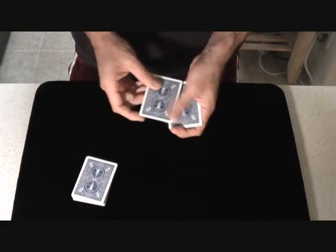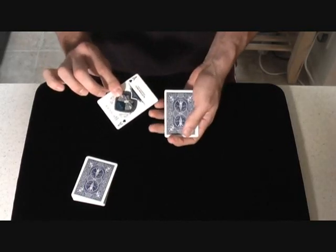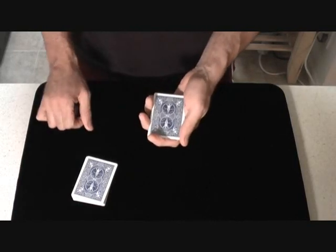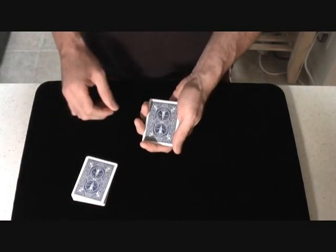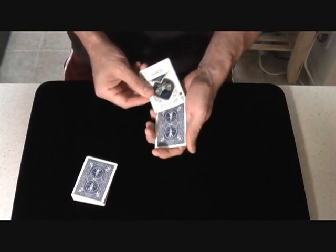Now notice they go from Ace at the top to 5 on the bottom. Watch where I place the Ace. All I have to do is the secret move. That causes the Ace to jump back to the top.